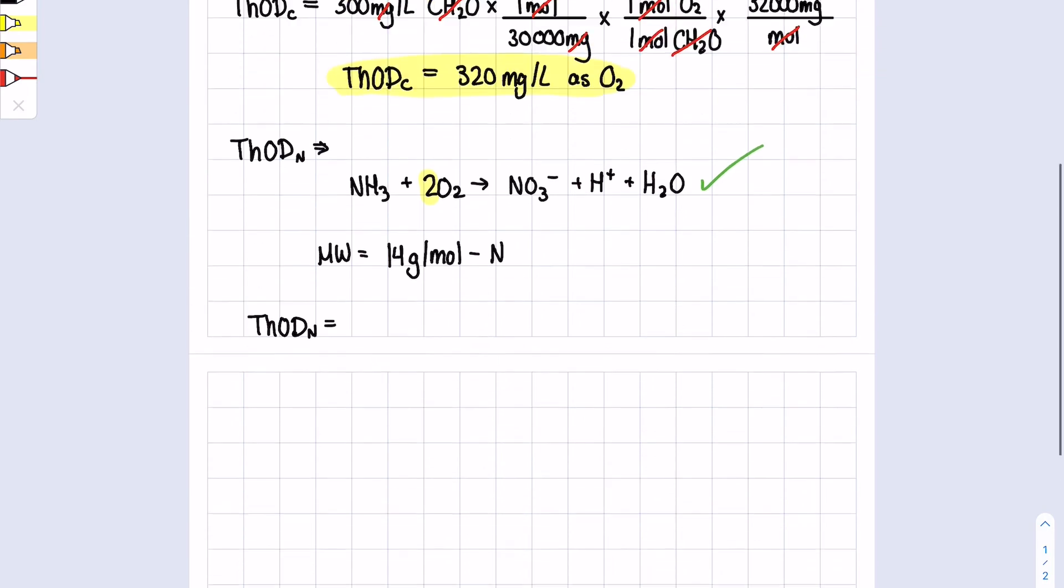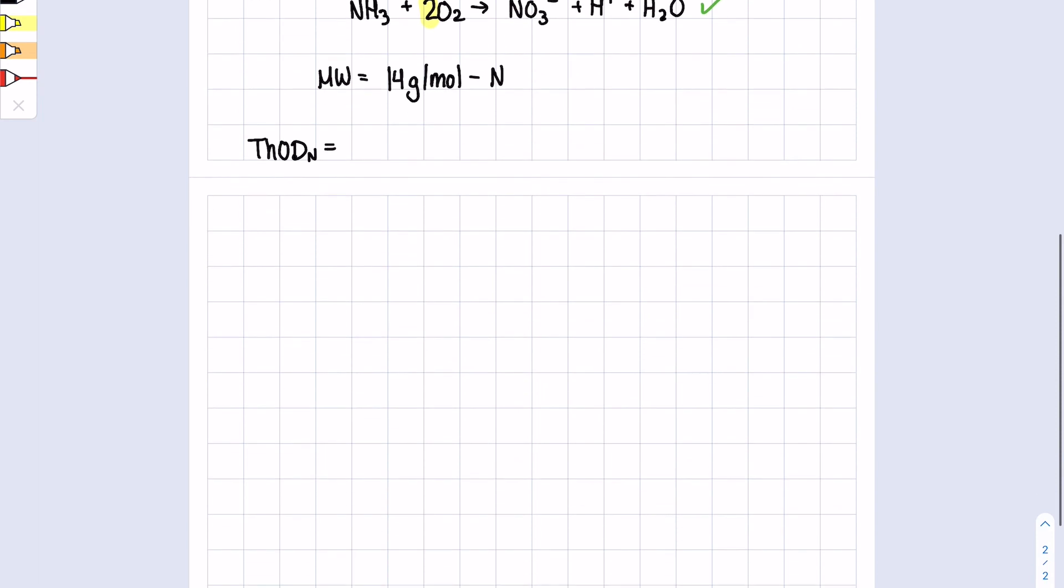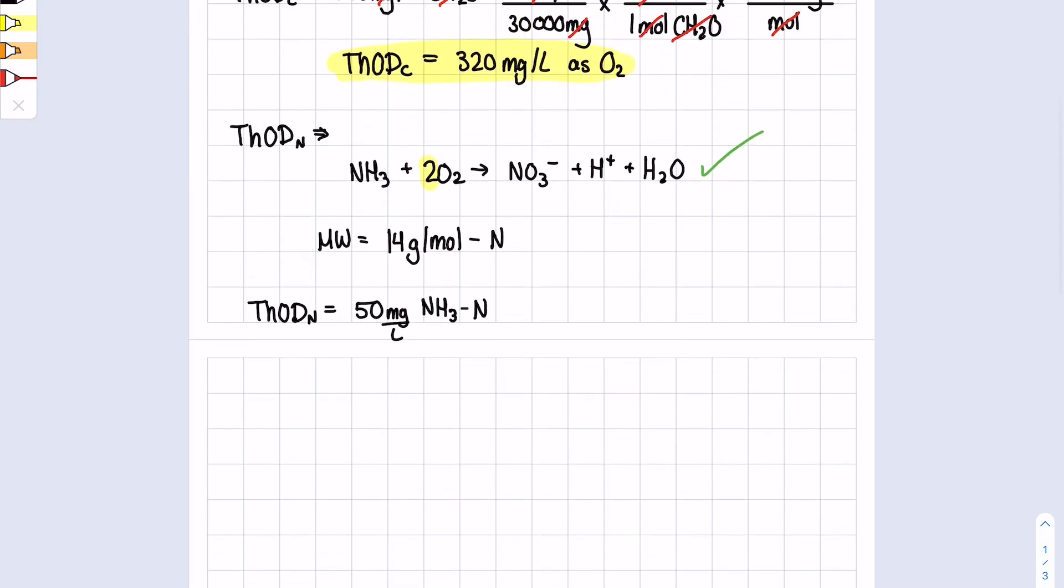The question gave us our first value: 50 milligrams per liter of NH3-N nitrogen. We're able to use the molecular weight of nitrogen: one mole over 14 grams per mole, but we're going to use 14,000 milligrams per mole just so we're able to relate it to the 50 milligrams.